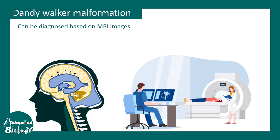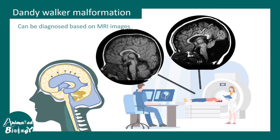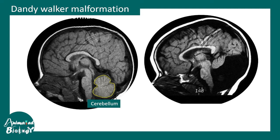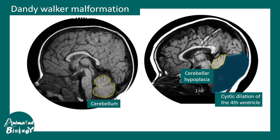These features of Dandy Walker malformation can be detected using MRI imaging. Notice the cerebellum nicely pointed out in the control MRI, whereas in the MRI of a Dandy Walker patient the cerebellum looks quite small — there is an overall hypoplasia of the cerebellum. Moreover, there is a cystic dilation of the fourth ventricle, with too much cerebrospinal fluid obstructed in that ventricle, creating the bulge at the back of the head.